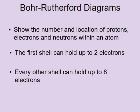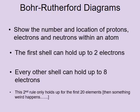The next rule is that every other shell after that can hold up to eight electrons. Now, that is a bit of a lie. In fact, this rule means we're only going to be able to do the first 20 elements on the periodic table using this method. That's fine, because when you get to the 21st element, something strange happens, and we'll look at that in another video.